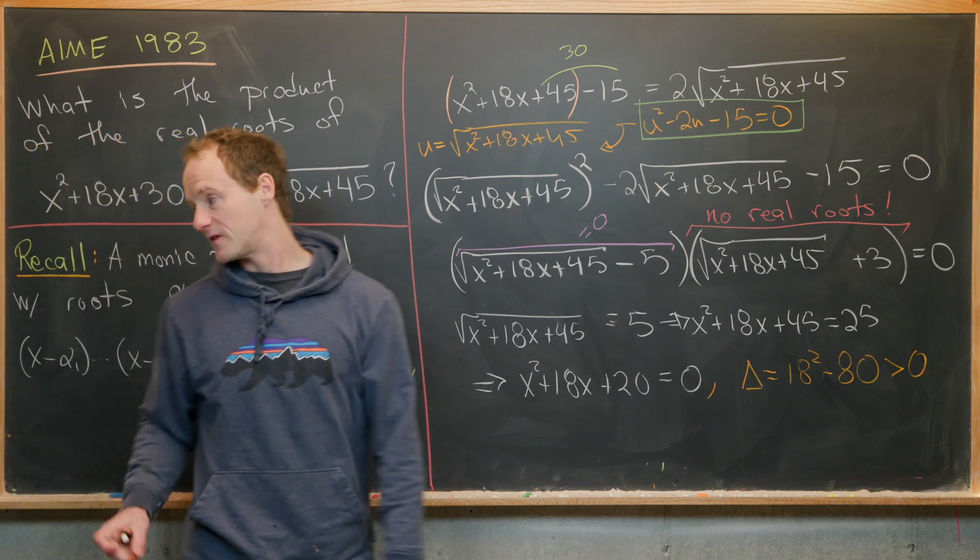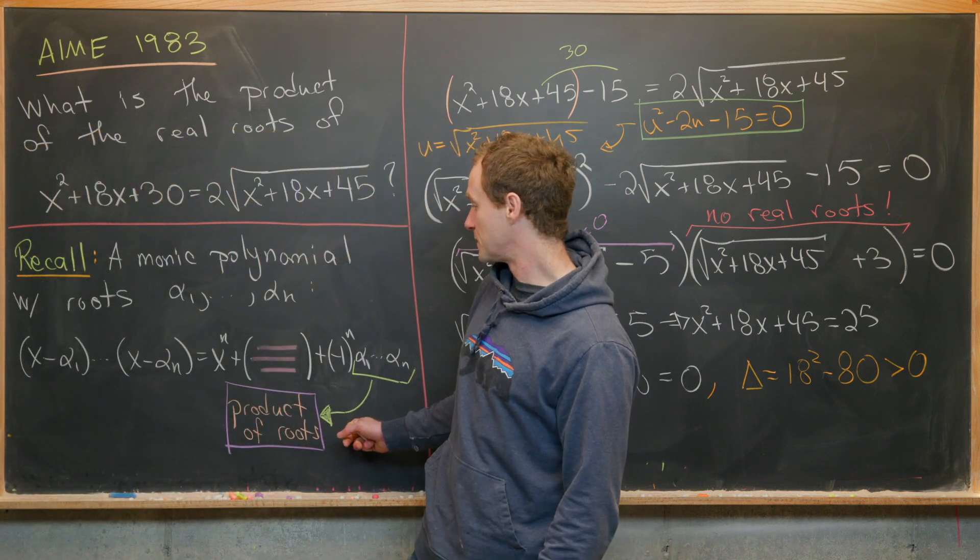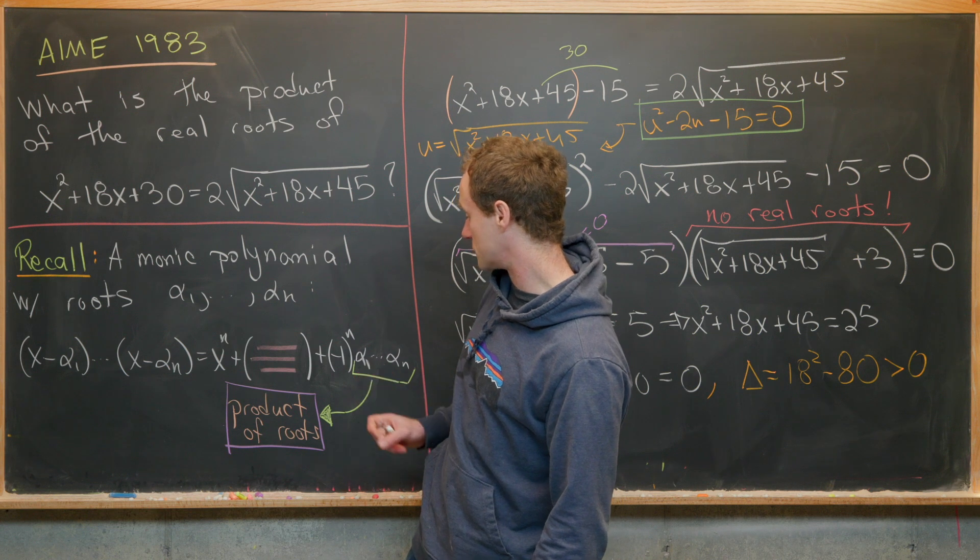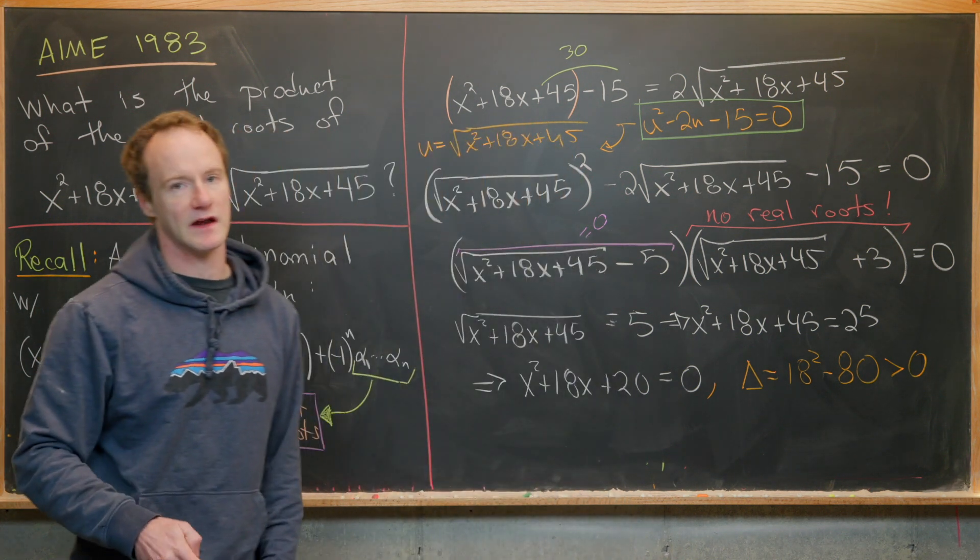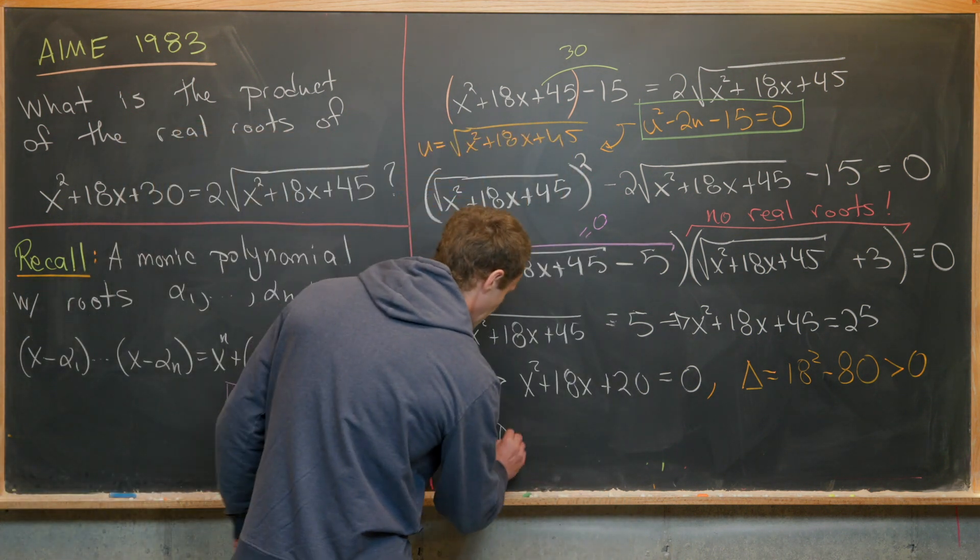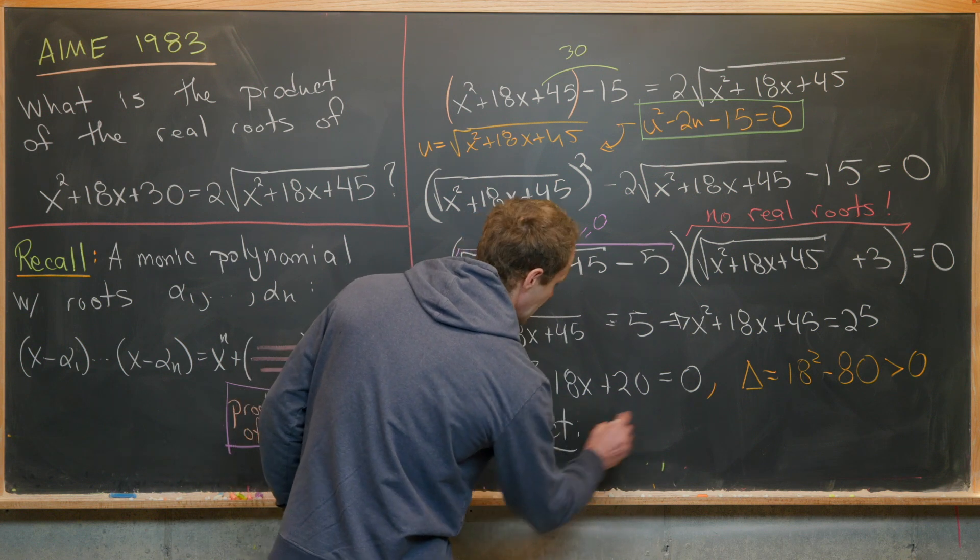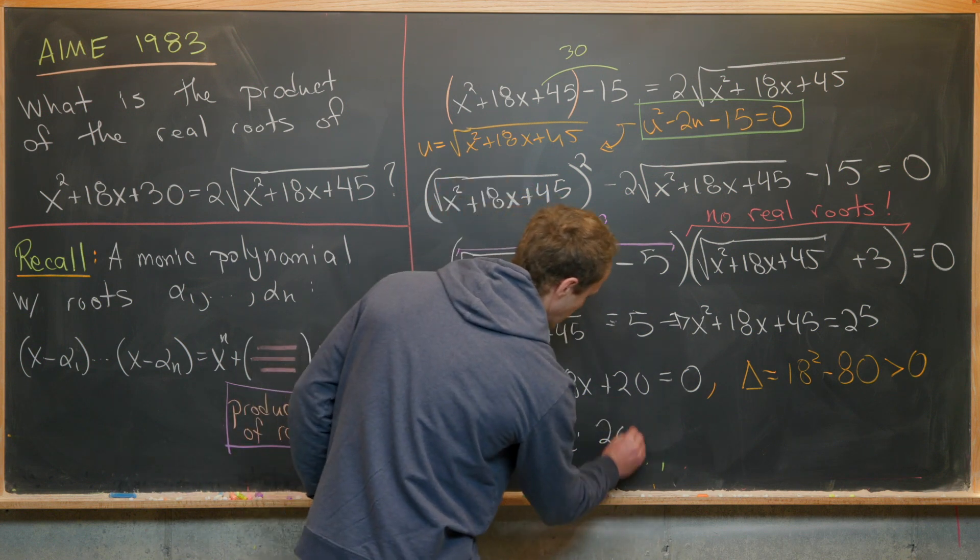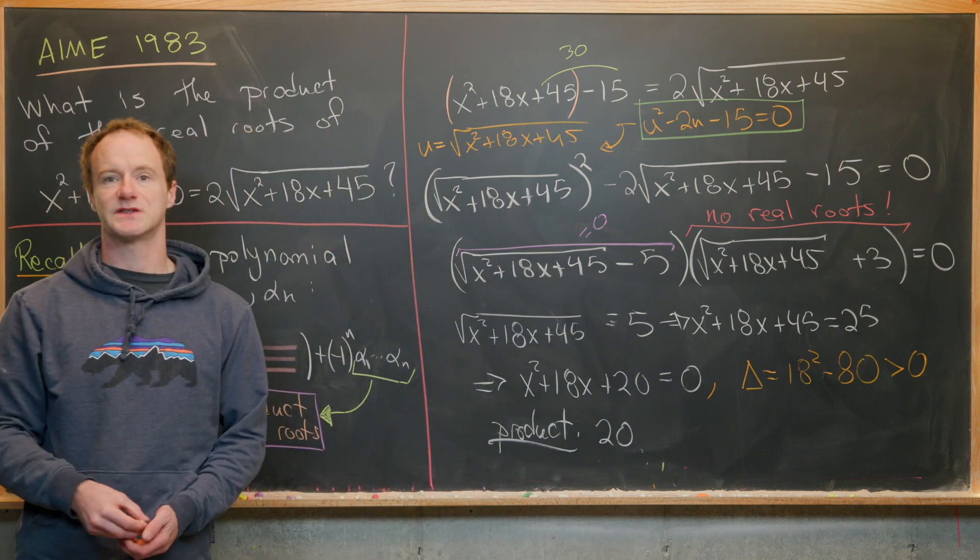Then applying this rule over here, we know what the product of the roots are even without calculating the roots. So the product of the roots in our case is 20. And that's a good place to stop.